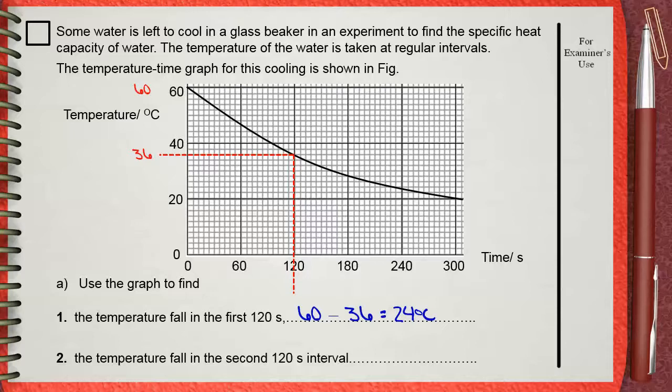And this is starting from 120 to 240 seconds. At 240 seconds, according to the graph, the temperature has fallen to 24. This means that in the second 120 seconds, starting from 120 to 240, the temperature has fallen by 36 minus 24. This equals 12 degrees Celsius.